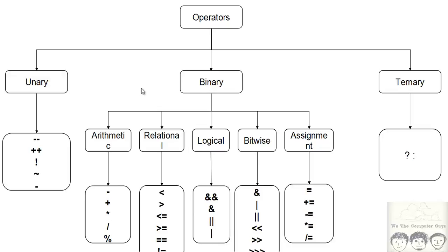Now let's look specifically at the binary part because we will be discussing arithmetic operators in this case. In arithmetic operators you have minus, plus, multiplication, division, and mod. We will talk about the mod in detail later — it is basically a remainder operator.